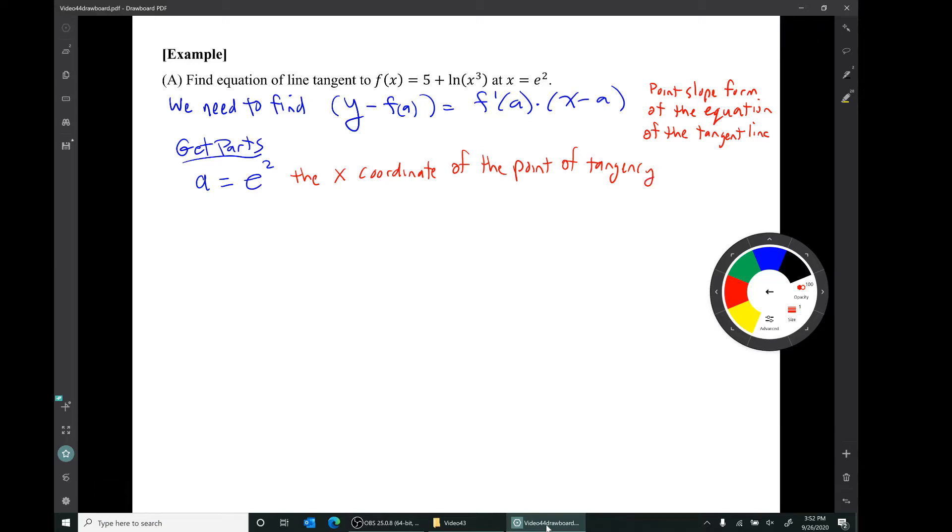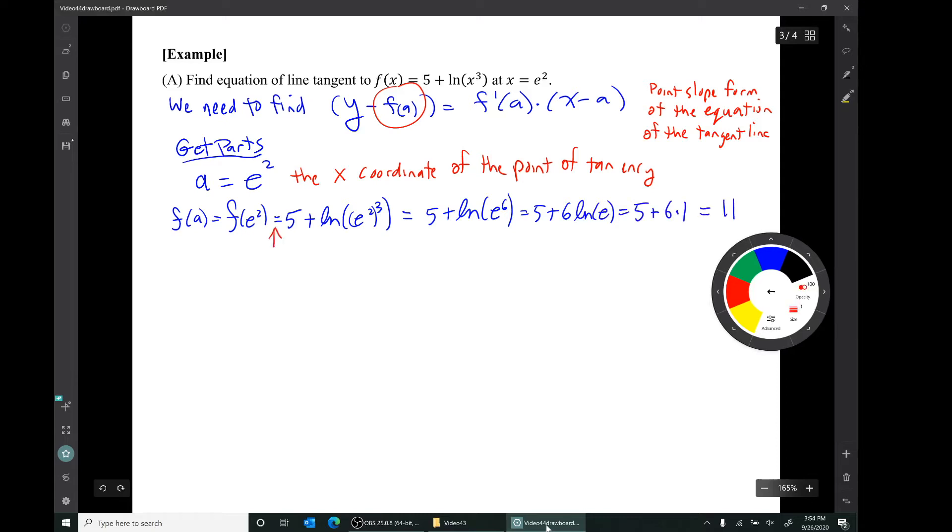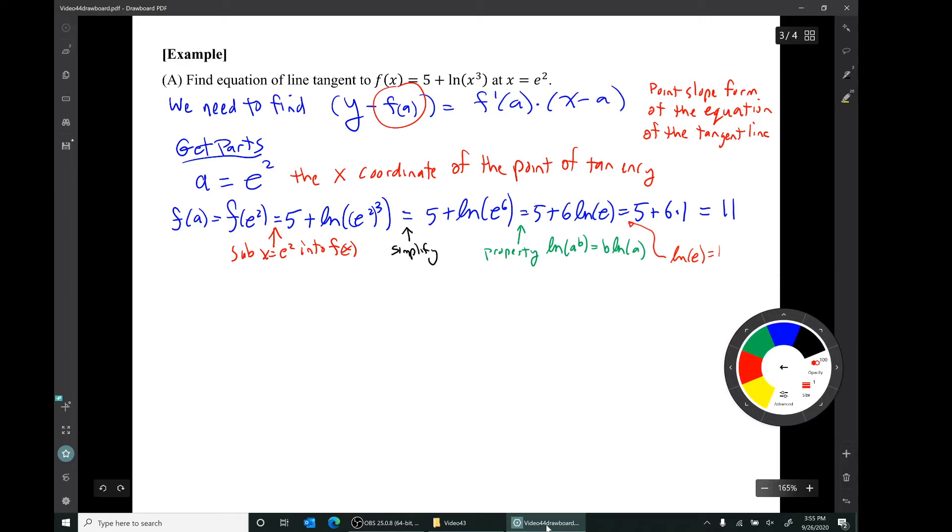The first part we need to get is this number a, the x-coordinate of the point of tangency. We're told that the x-coordinate is e². The next thing we need is f(a). We get a = e², the x-coordinate of the point of tangency. Now we substitute x = e² into f(x). We replaced the x in this symbol for f(x) with the symbol e². The next thing we did was simplify. e² cubed is the same as e to the sixth. We used that property of exponents. Then we used the property of logarithms: ln(a^b) = b·ln(a).